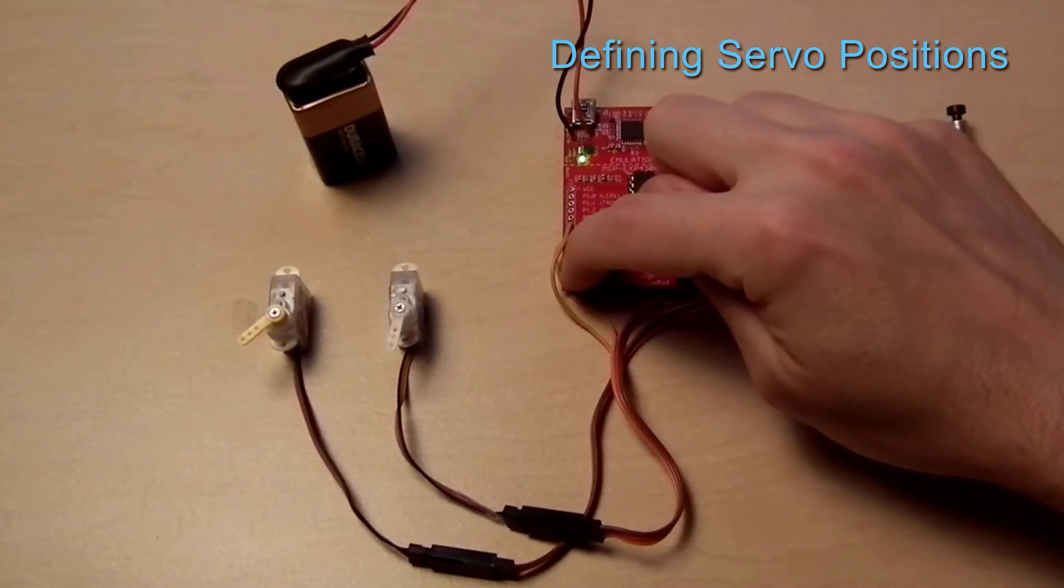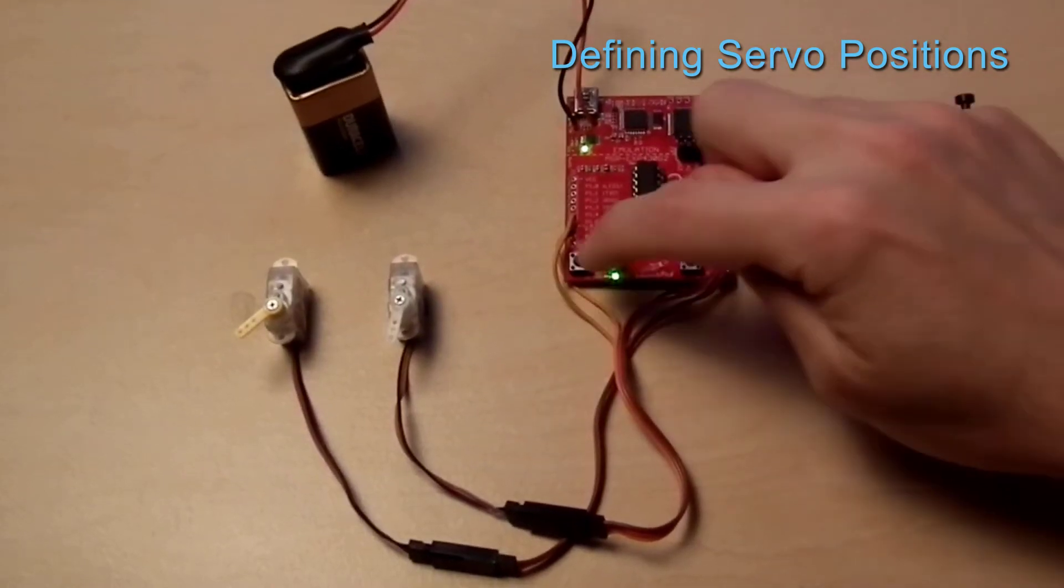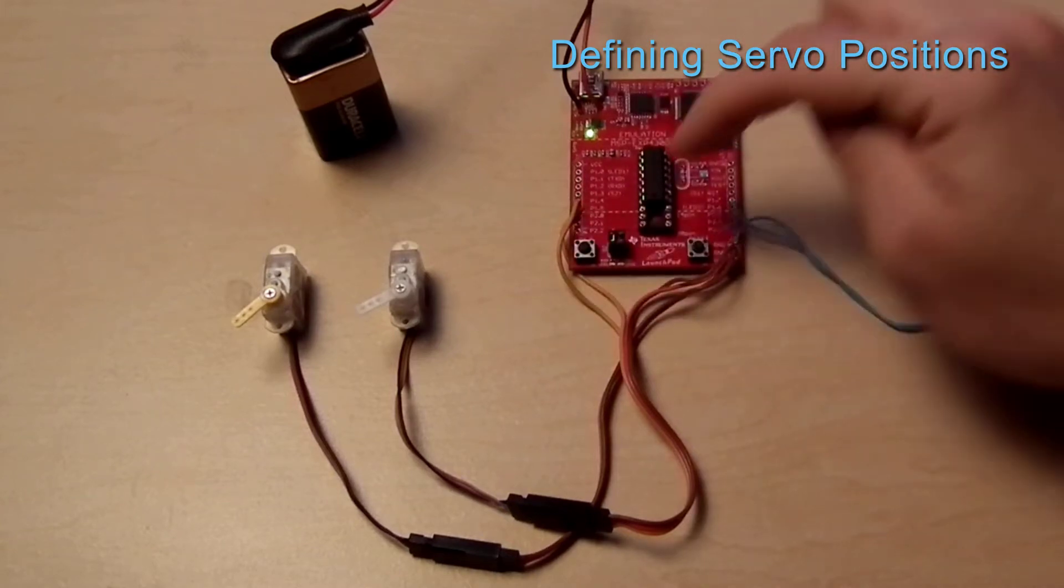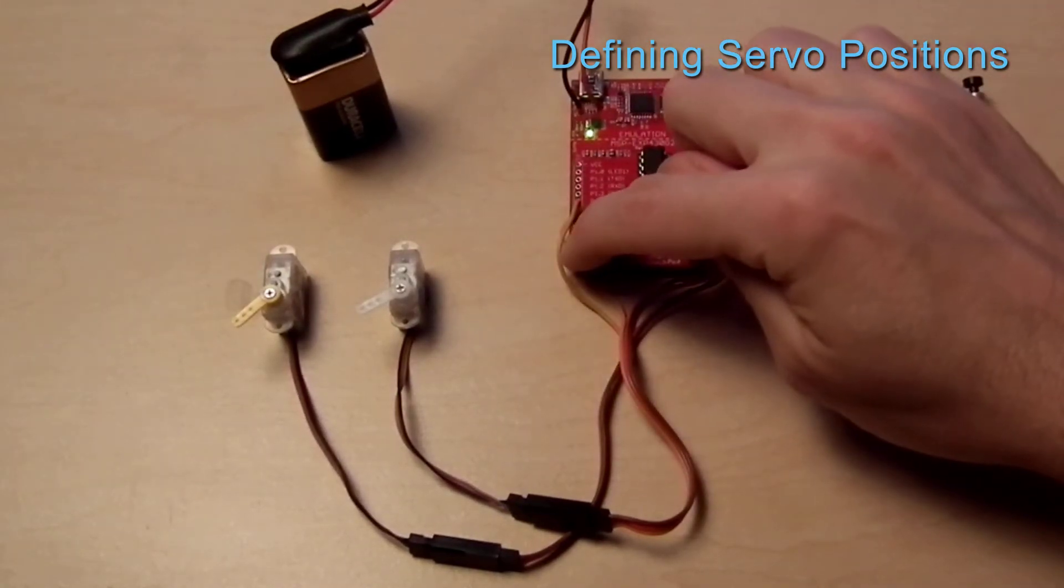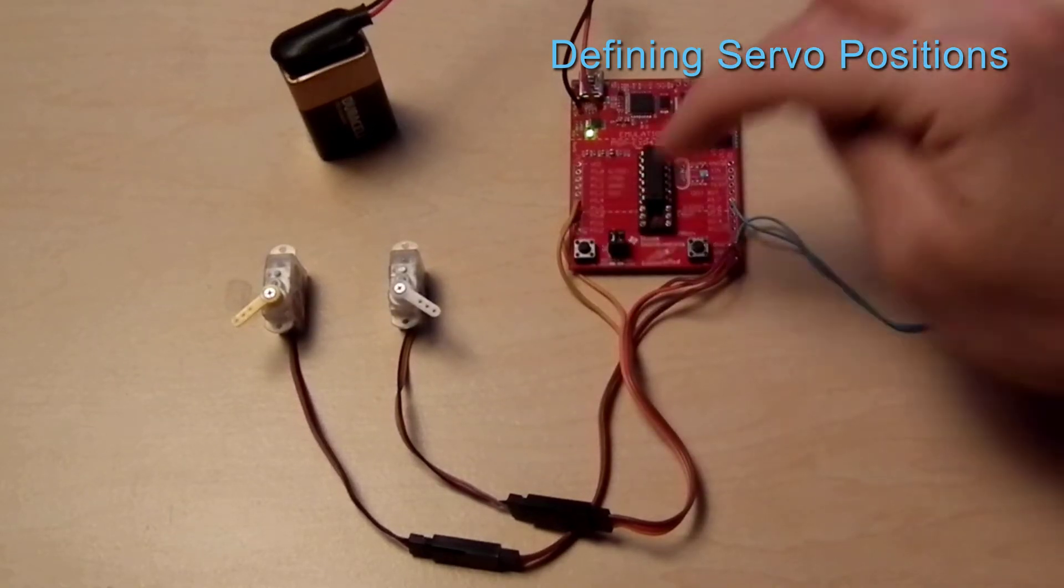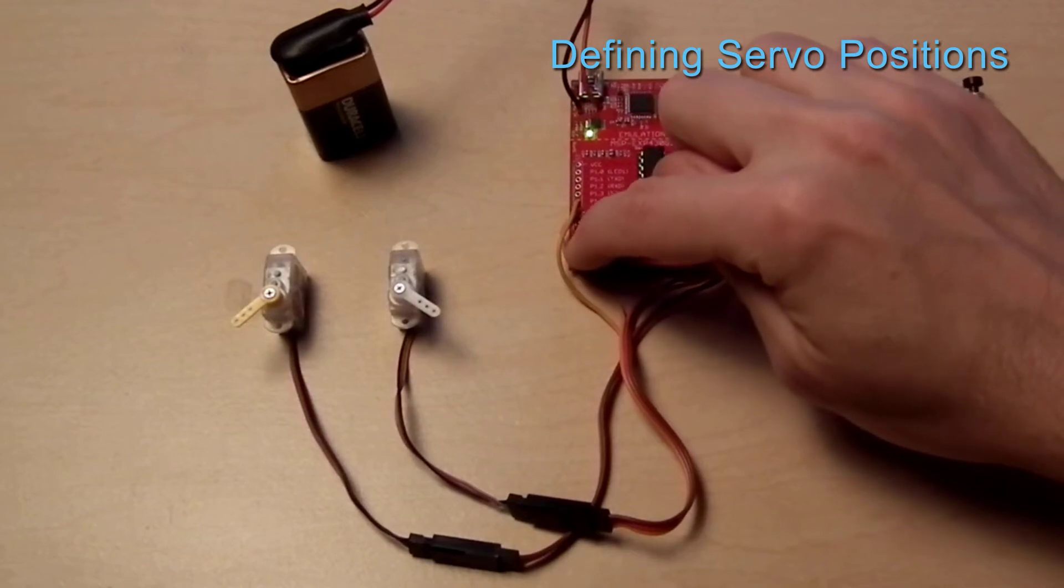The green LED illuminates next to show that servo B is being set. The home position is set first followed by the deploy position using the same mode button tapping to move, then holding to save technique. Both servos will move to the home position when the position configuration is complete.